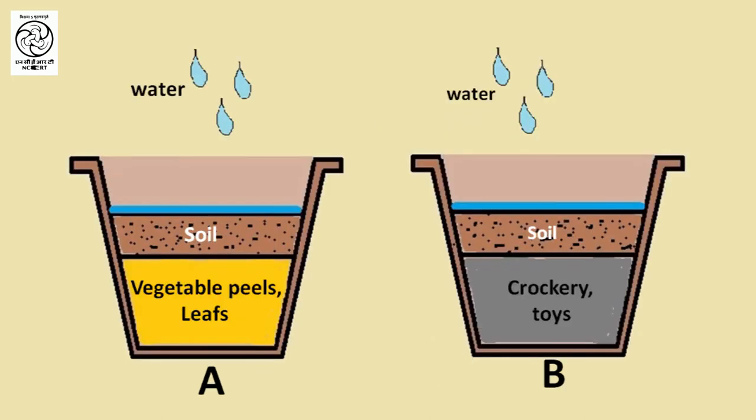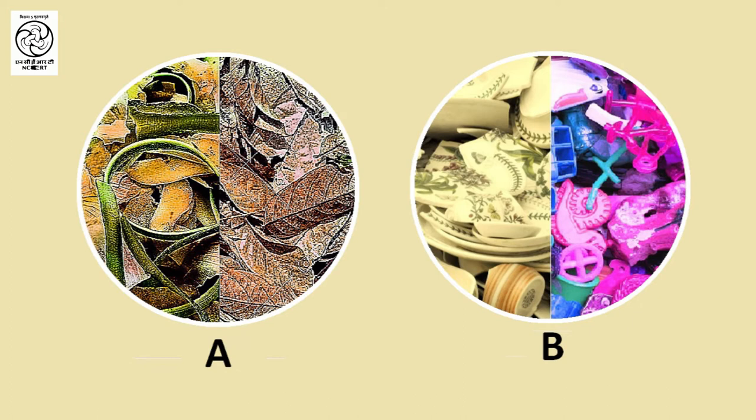After some time, as time passes, the vegetable peels and leaves in Pot A have started degrading. In the second pot, the broken toys and crockeries remain as such. Ma'am, why didn't all the waste disappear from Pot B? This degradation is due to the enzymatic activity of microbes. In Pot A, the microbes have eaten up the vegetable peels and leaves. This type of waste is known as biodegradable waste.